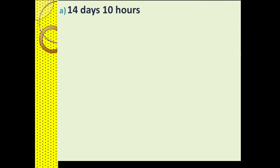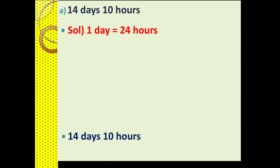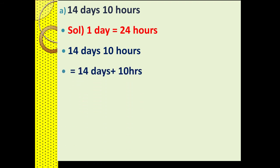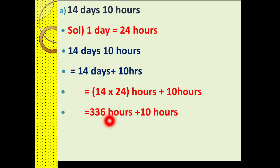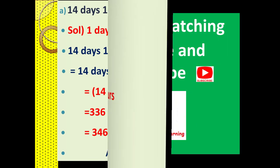Let us do one more example. We are given 14 days 10 hours and want to convert it into hours. First, we state the relationship: one day has 24 hours. Next, we split 14 days 10 hours as 14 days plus 10 hours. In the third step, we convert the days into hours by multiplying 14 by 24, giving us 336 hours. Then we add 10 hours, and finally we get 346 hours in 14 days and 10 hours.